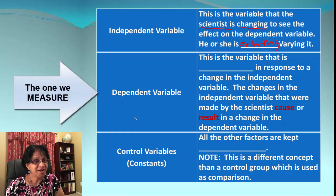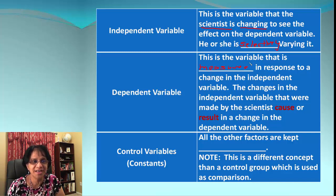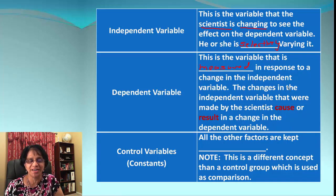Dependent variable is the one that is measured while doing the experiment, and this is the response to the change in independent variable. Keep in mind, the changes we make for the independent variable may cause or result in changes in the dependent variable.